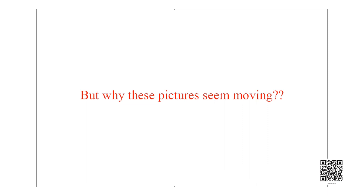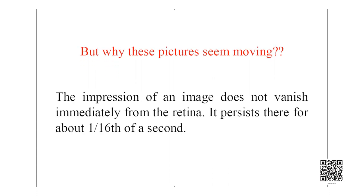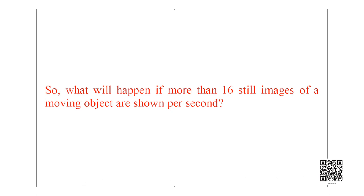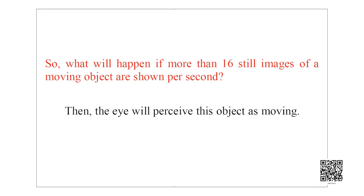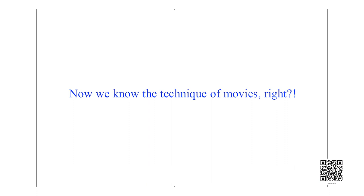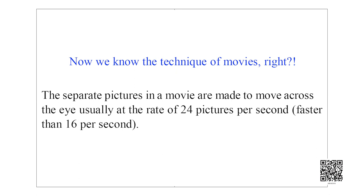Now let us see how our eyes see movies and videos. A video or movie is like moving pictures. We see movies and videos as moving pictures because the impression of an image does not vanish immediately from the retina — it persists for about 1/16th of a second. So if more than 16 still images of a moving object are shown per second, the eye perceives the object as moving. Movies and videos use separate pictures called frames, shown at 24 or 30 frames per second, and some videos go up to 60 frames per second.